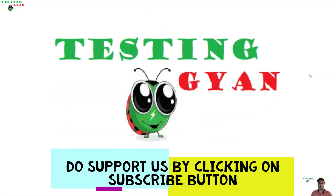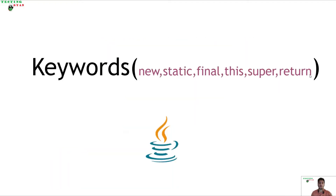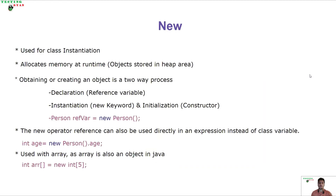Hello everyone, welcome to our YouTube channel TestingGyan. In today's video we are going to learn about a few commonly used keywords in Java. The first keyword in the list is the new keyword. The new keyword is used at the time of class instantiation and it helps to allocate memory to objects at runtime.